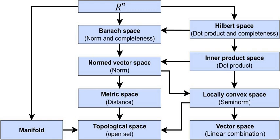In mathematics, a space is a set with some added structure. While modern mathematics uses many types of spaces, such as Euclidean spaces, linear spaces, topological spaces, Hilbert spaces, or probability spaces, it does not define the notion of space itself. A space consists of selected mathematical objects that are treated as points, and selected relationships between these points.